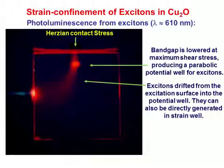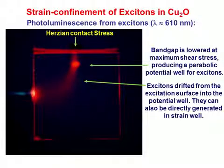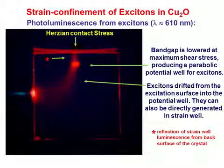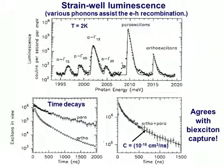Consider a gas of excitons trapped in a potential well, produced by stressing the crystal with a rounded glass plunger. Excitons created at the crystal surface are drawn into the potential well, where the stress is highest and the semiconductor band gap is lowest, producing an effective trap for the excitons. Measured here is the luminescence spectrum of strain-confined excitons, showing both ortho- and paraexciton luminescence assisted by phonons. The decay of exciton luminescence after direct excitation in the strain well is explained by the formation of biexcitons. The capture coefficient c agrees with that measured for the unstressed crystal.